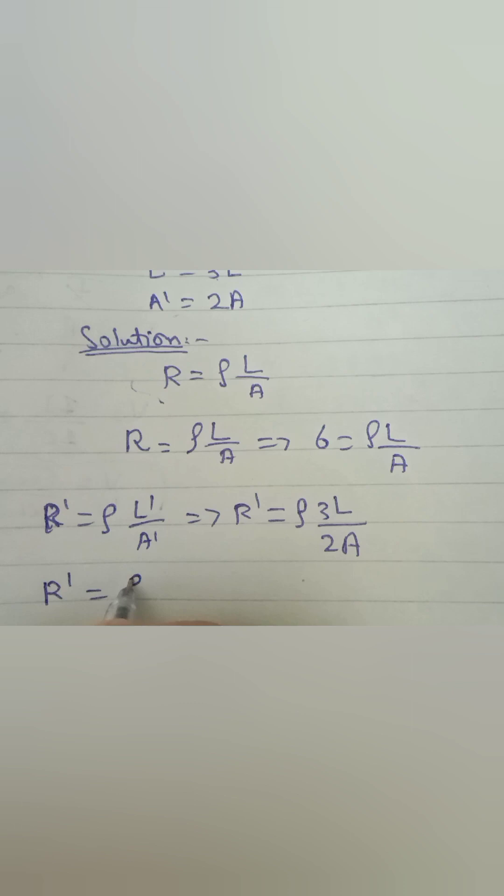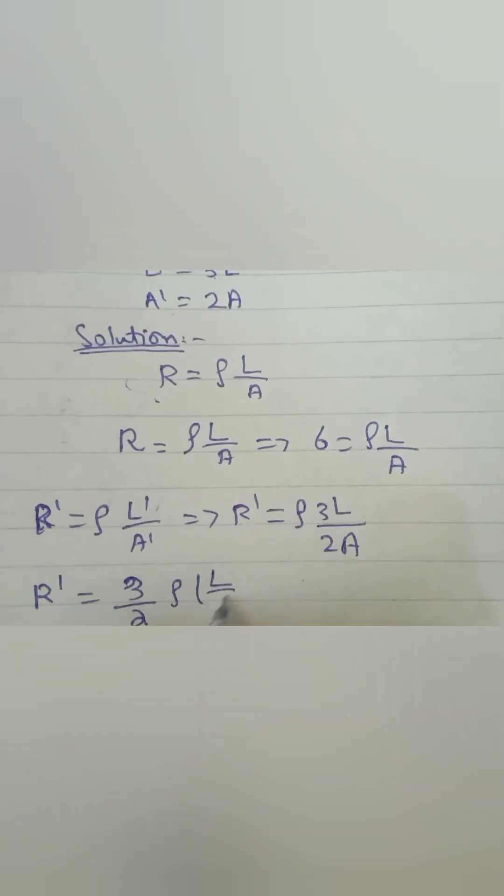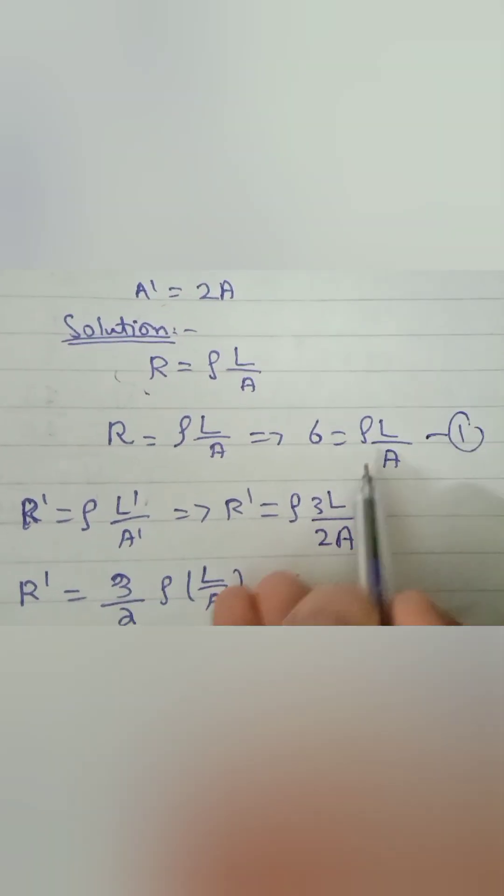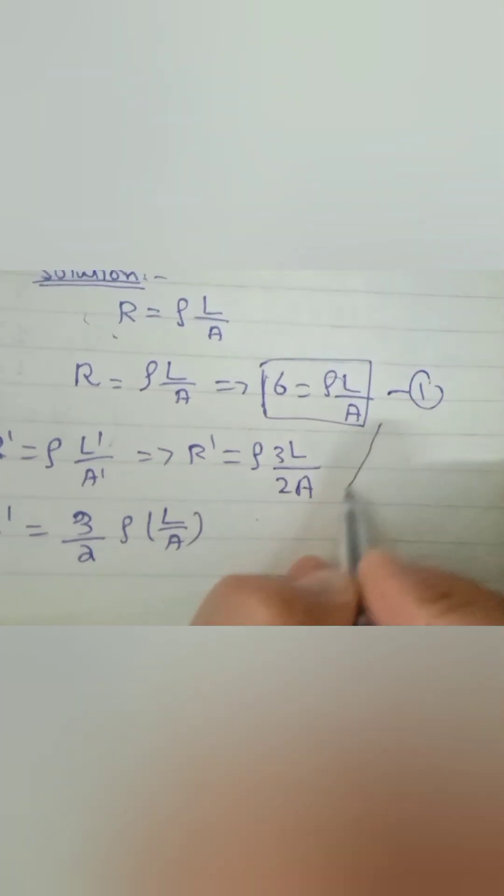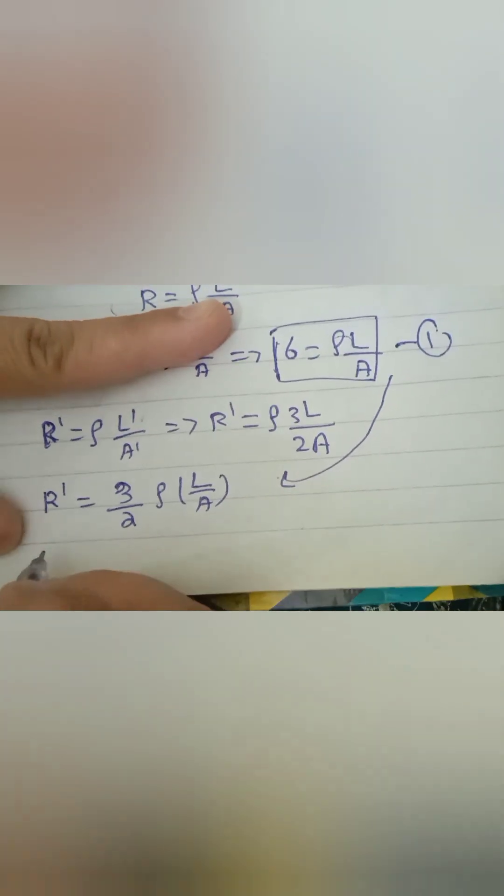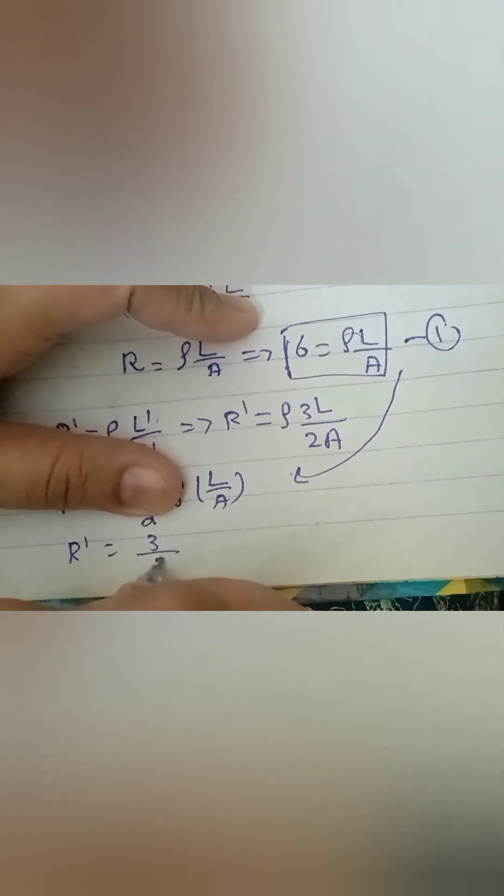So R' becomes: we take 3/2 outside and we are left with ρL/A. From the original resistance we obtain the value of ρL/A. Put it in that equation. Then the new resistance becomes 3/2.